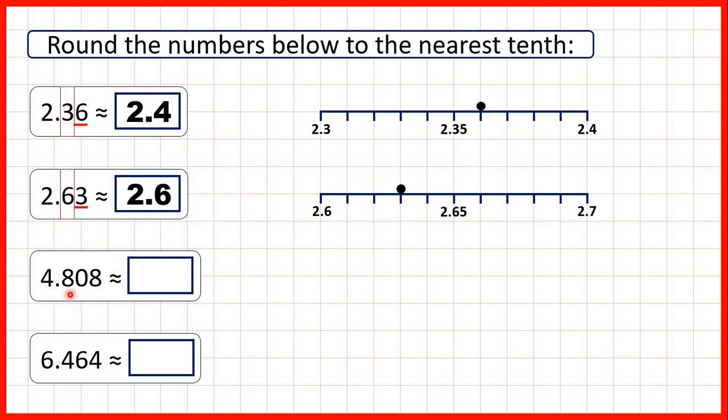Now we have 4.808. So this time we have three digits after the decimal point but the thousandths digit doesn't make a difference when we're rounding to the nearest tenth. We do the same thing. We find the tenths digit and underline the hundredths digit.